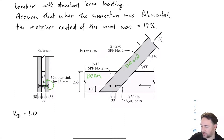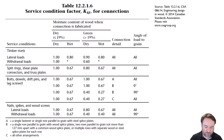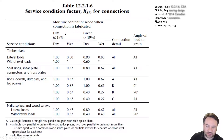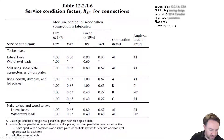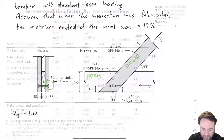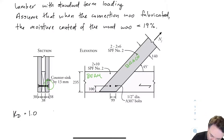Let's figure out what KSF should be — our service condition factor for the fasteners. We're talking about a dry fabrication condition with a wet service condition, so we're looking in that column. We're dealing with a bolted connection, so regardless of the orientation of our connection, our KSF factor is going to be 0.67.